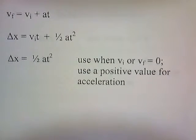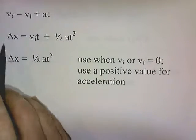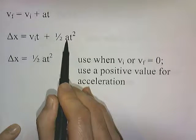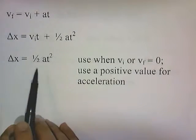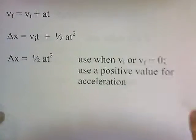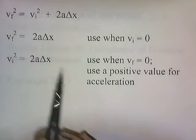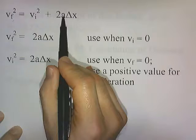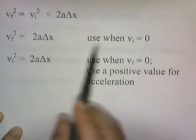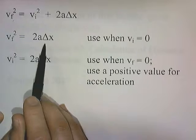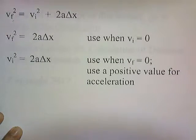Here is a summary of the formulas. vf equals vi plus at. Delta x equals vi*t plus one-half at squared — for this, if something's slowing down, acceleration must be negative; but if starting from rest or coming to a halt, use the abbreviated formula with positive acceleration. The other formula is vf squared equals vi squared plus 2a*delta x — again, if an object slows down, acceleration must be negative. The abbreviated forms vf squared equals 2*a*delta x (when vi equals 0) and vi squared equals 2*a*delta x (when vf equals 0) can both use positive acceleration.